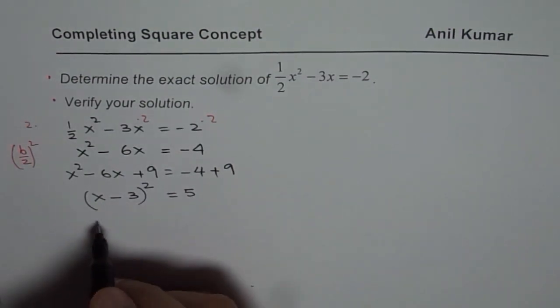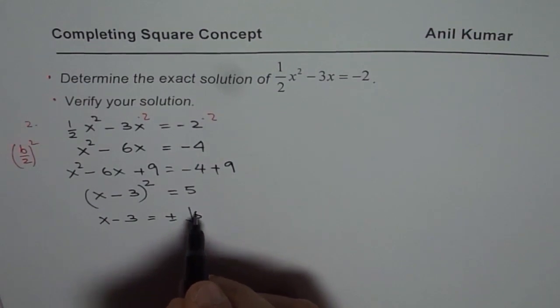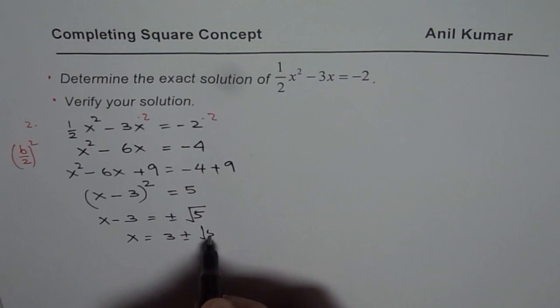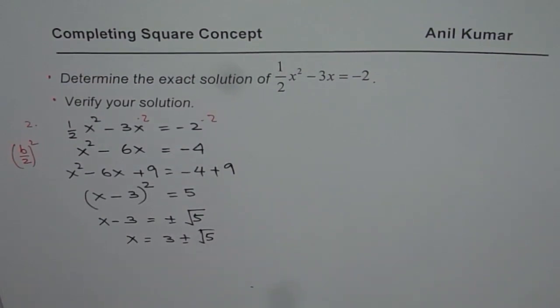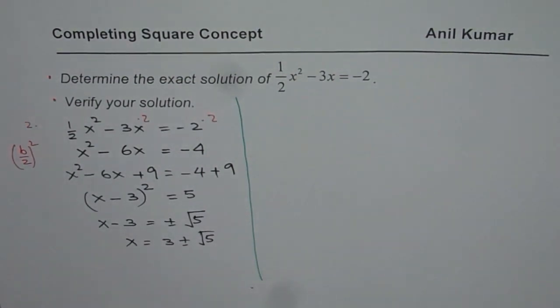Now we can square root. So we get x minus 3 equals to plus minus square root of 5 and x is equals to 3 plus minus square root of 5. So we get our solution which is x equals to 3 plus minus square root of 5.